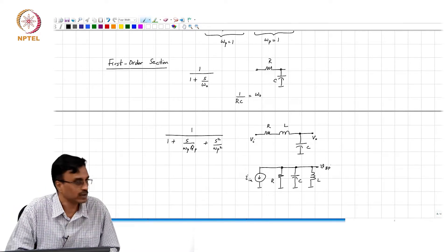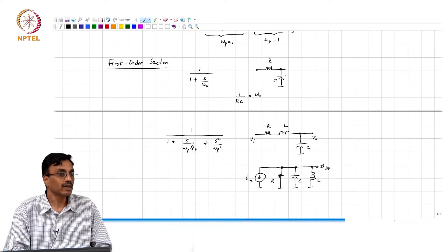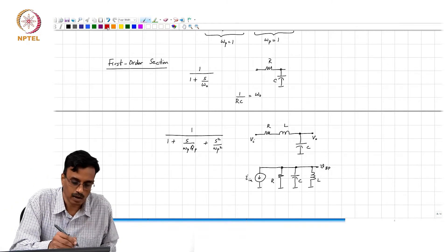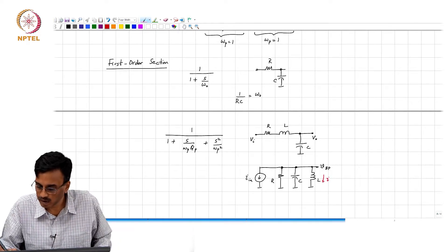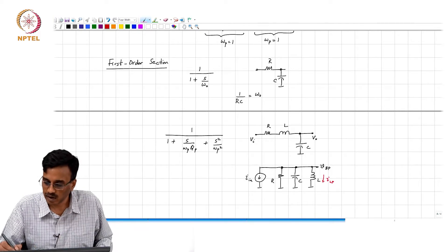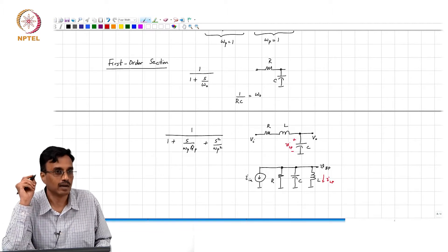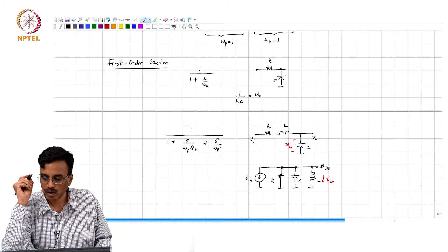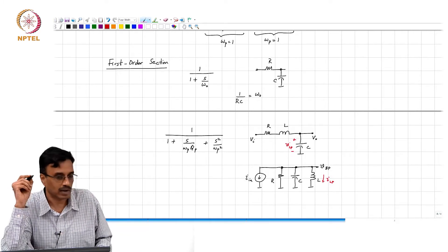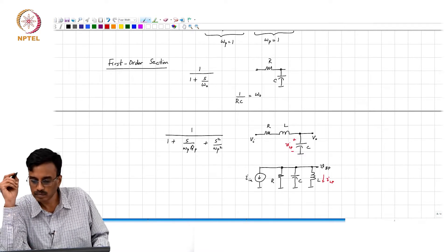If you want a low pass transfer function what are we supposed to look for? Current through the inductor, very good. So basically this is I_LP, likewise in this, this is nothing but V_LP, the low pass voltage output.